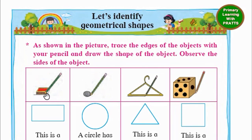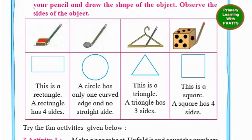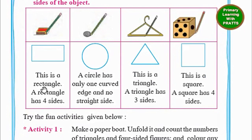So if you take a matchbox, what do you get? Let's read. This is a rectangle. A rectangle has 4 sides. Coin.